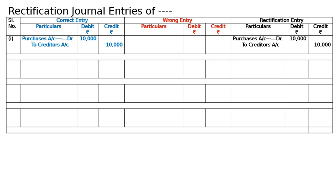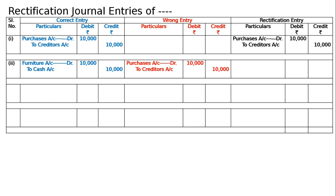The second error: purchase of office furniture of 10,000 was recorded in the purchases book. The correct entry should be furniture account debited to cash account 10,000. It is not mentioned whether it was a credit purchase; by mistake it was written in the purchases book as purchases account debited to creditors account 10,000. Here there is a mistake.